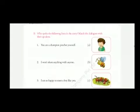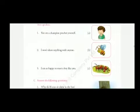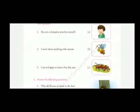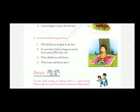Exercise B: Who spoke the following lines in the story? Match the dialogues with their speakers. 'You are a champion pincher yourself' — this was said by option C, the bees. 'I won't share anything with anyone' — option A, Karan. 'I am so happy to meet a boy like you' — option B, the bee.